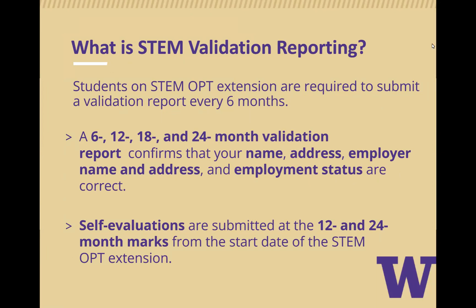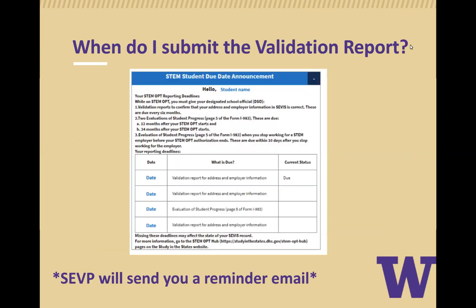You will report a 6, 12, 18, and 24-month validation report that confirms your name, address, employer name and address, and your employment status are correct. The 12 and 24-month validation reports require you to complete page 5 of the I-983 form. You will be notified to submit a STEM OPT validation report through the SEVP portal, and SEVP will also send you a reminder email.